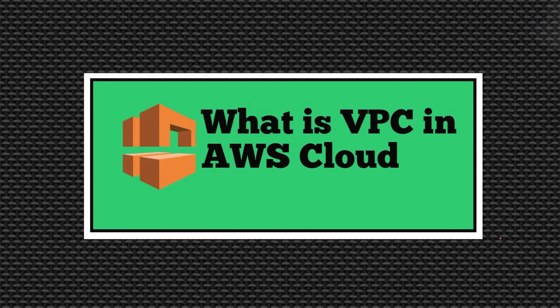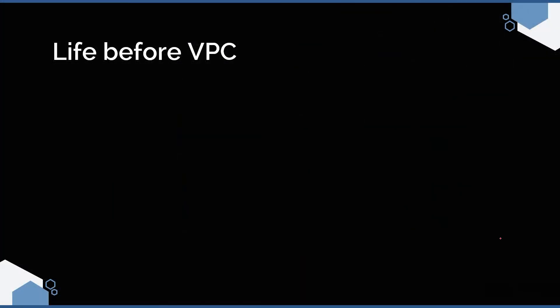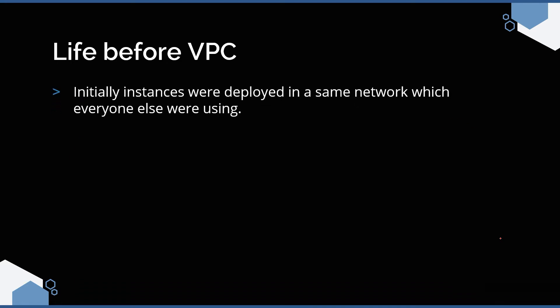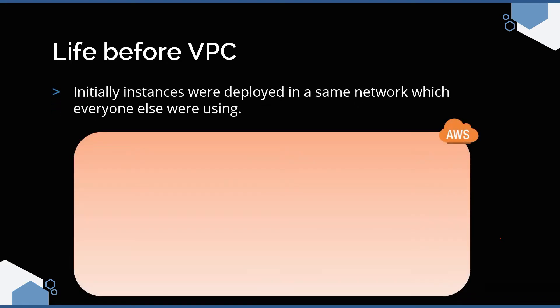Before we dwell any further, let us first try to understand how Amazon operated before VPC was introduced. Let us assume you're trying to deploy your infrastructure in a cloud provider like Amazon. Any cloud providers like Amazon, Azure, or Google are public cloud providers, which means they welcome anybody to come and set up the infrastructure and bring their applications up. Although there are a lot of advantages, one of the major disadvantages is a security threat.